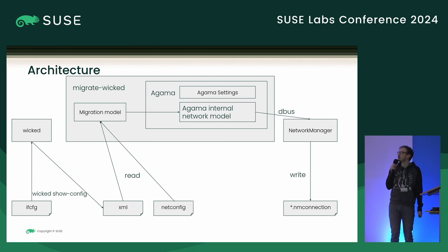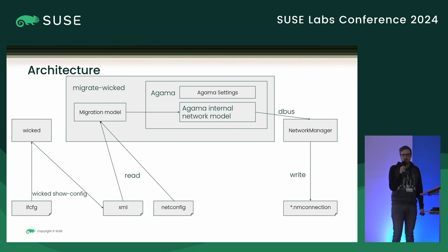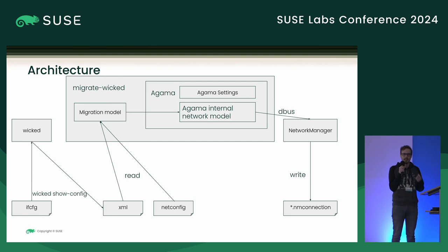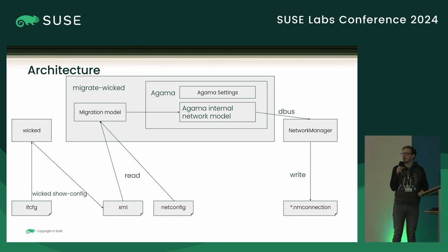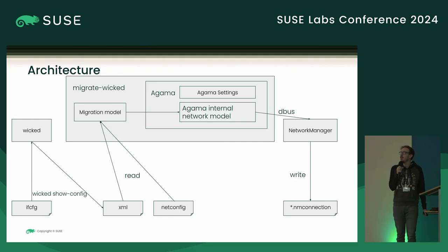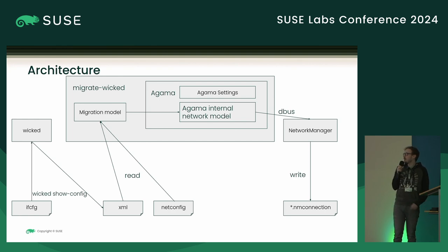From that point Agama does everything for us — it talks to Network Manager via D-Bus and adds all our connections. One thing to note: currently we always just add connections, which is why we really only support the container workflow currently. If we were to run it on a live system there would probably already be connections that would need to be modified, but this isn't a technical limitation — Agama can do this perfectly fine. It's just easier for now since it's still very much a work in progress. The last step is Network Manager writing nm connection files for all these connections, which we then extract out of the container.